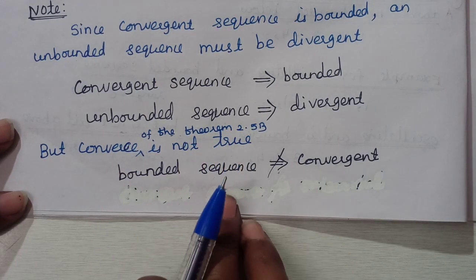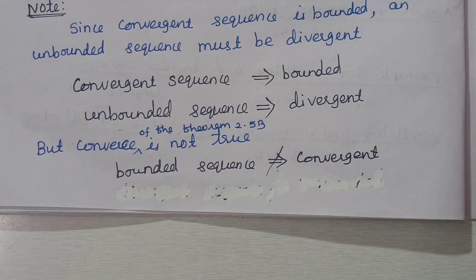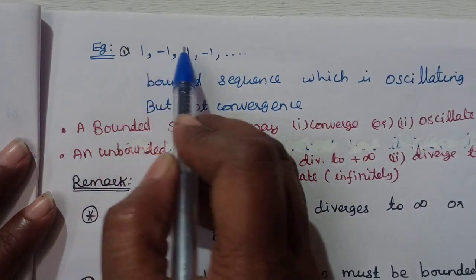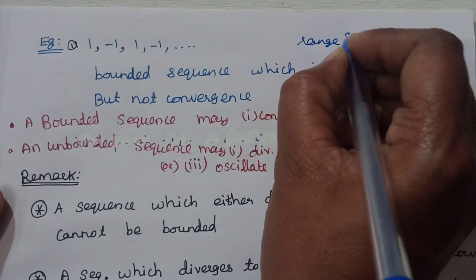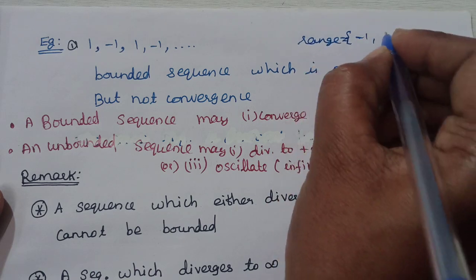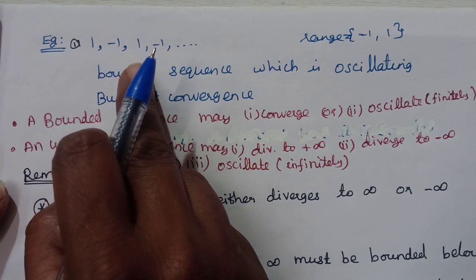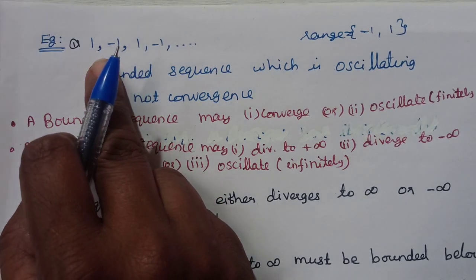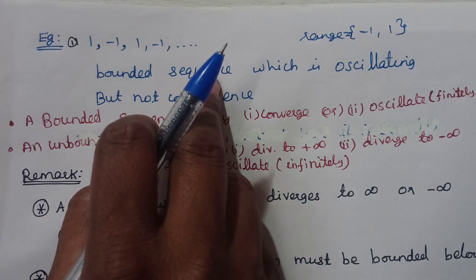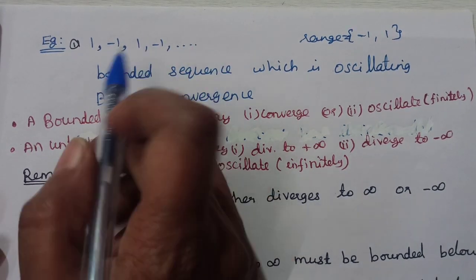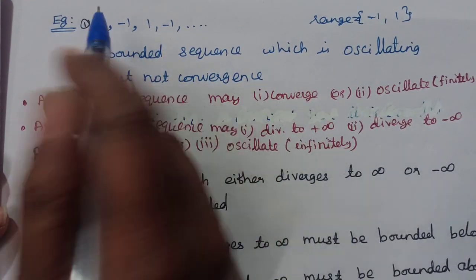Example: the sequence 1, -1, 1, -1, ... is a bounded sequence with upper bound 1 and lower bound -1. But it is an oscillating sequence, which is a divergent sequence, so it is not convergent. Therefore, bounded sequence need not be convergent.